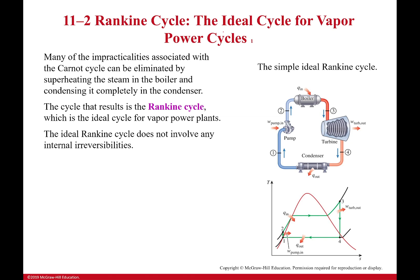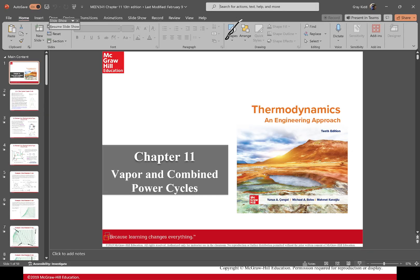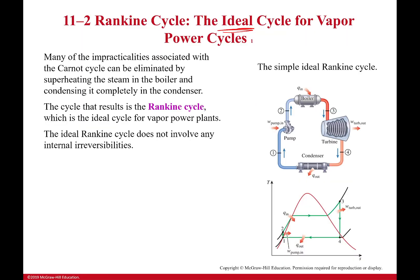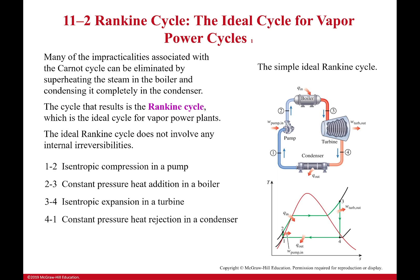Now, since it is ideal right here, one thing to remember is that we're saying it has no irreversibilities. As we move through this chapter, though, what we're going to see is that there are irreversibilities, and we can correct for those. So, first off, four steps. We have isentropic compression in a pump. That's going right here, where I'm a saturated liquid, up to here.